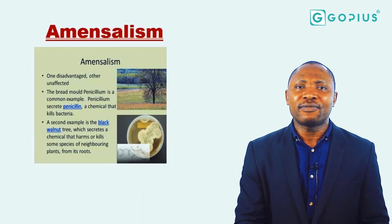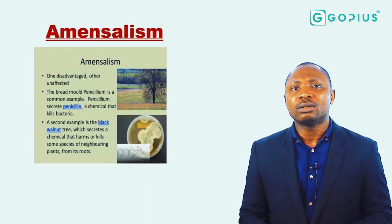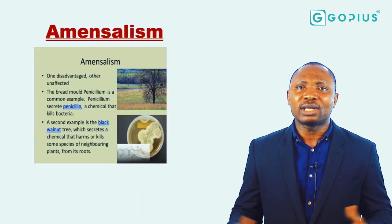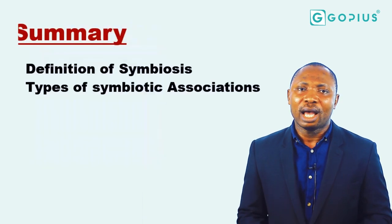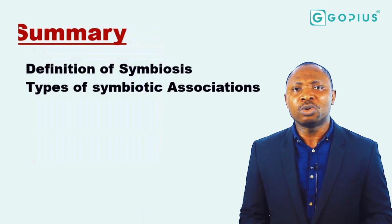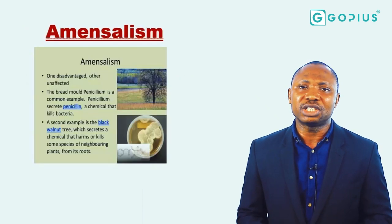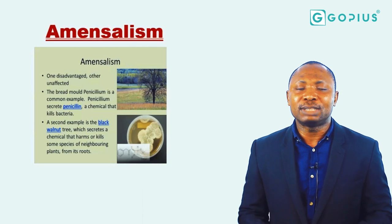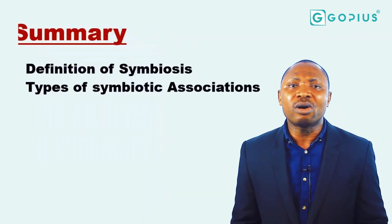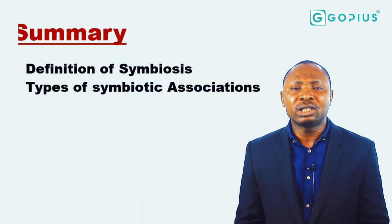So far we have looked at the various relationships between organisms and the different types of symbiosis, along with typical examples of these associations. Symbiosis is basically about the relationship between organisms of the same species or different species — either they are gaining, not gaining, or the presence of one is having a negative effect on the other. Join me as we go into the session of questions and answers.